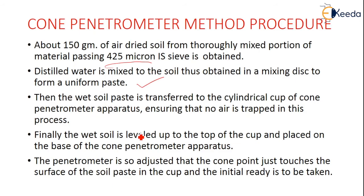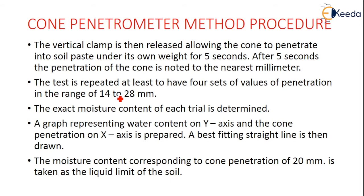The penetrometer is adjusted so that the cone point just touches the surface of the soil paste in the cup, with initial readings ready to be taken. The vertical clamp is then released, allowing the cone to penetrate the soil paste under its own weight for about 5 seconds, after which the penetration is noted to the nearest millimeter. The test is repeated to obtain at least 4 sets of penetration values in the range of 14 to 28 mm.